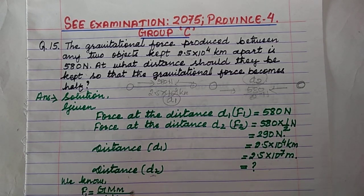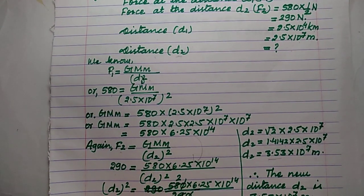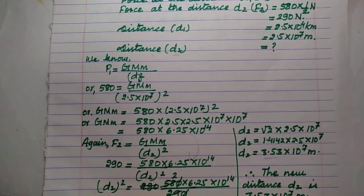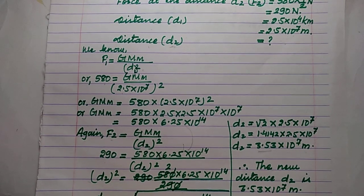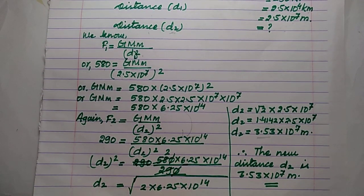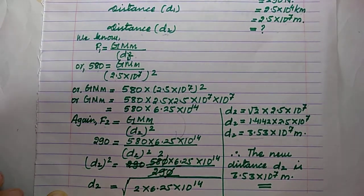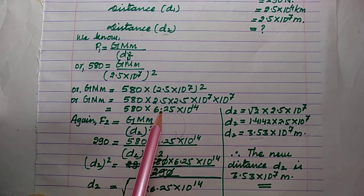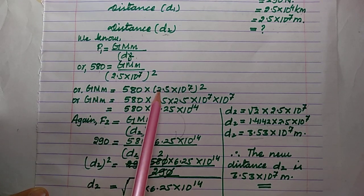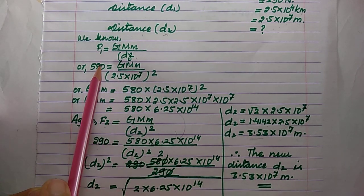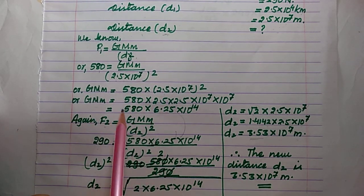We have to calculate new distance D2. From the formula, F = GMm / D². So F1 = 580 Newton = GMm / (2.5 × 10⁷)². The value of GMm can be found by rearranging this equation using cross multiplication, giving us the value of GMm.